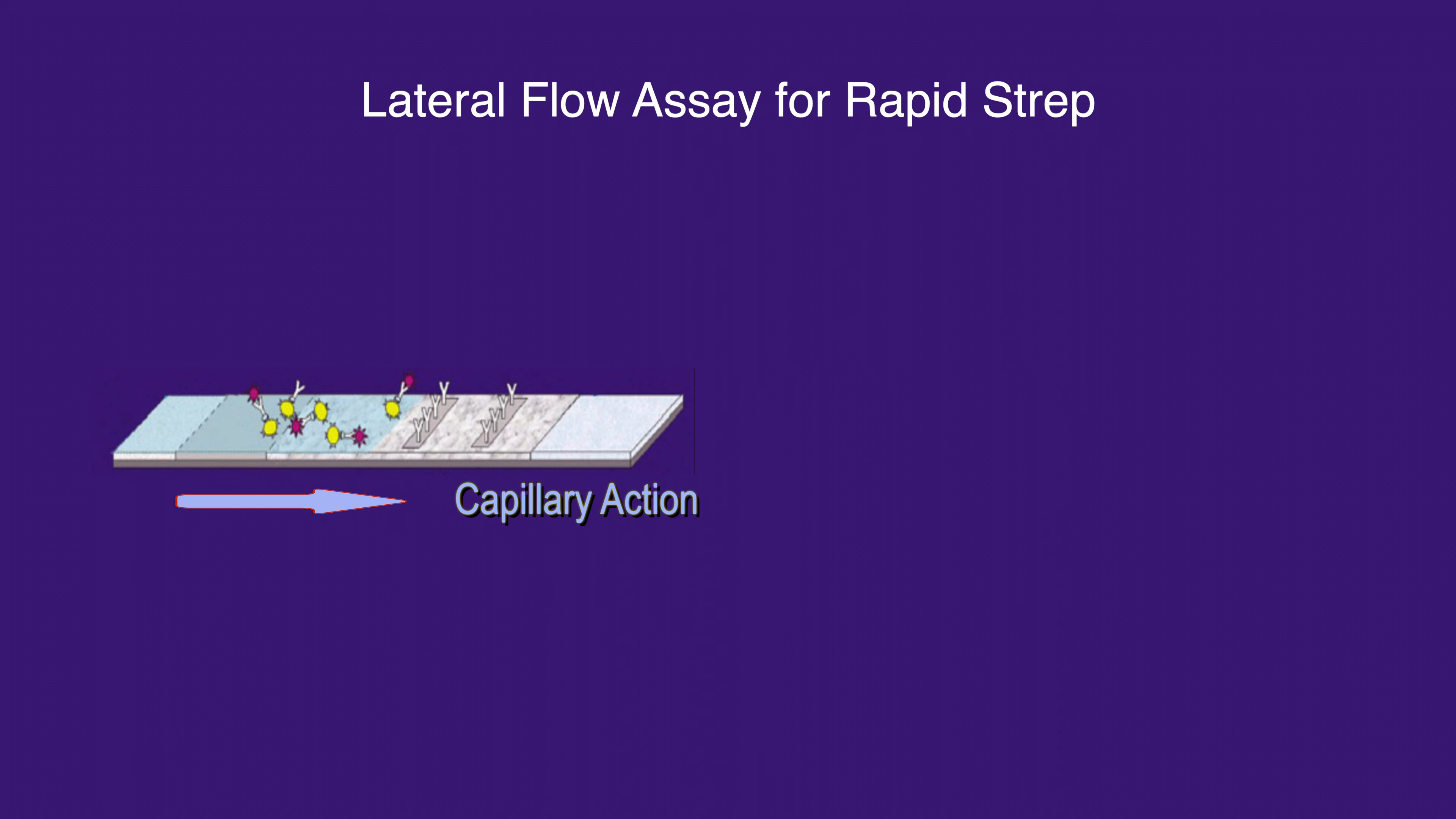When the antibody pigment strep complex encounters the rabbit anti-strep A antibody immobilized in the test region, it produces a colored test band and indicates a positive result.